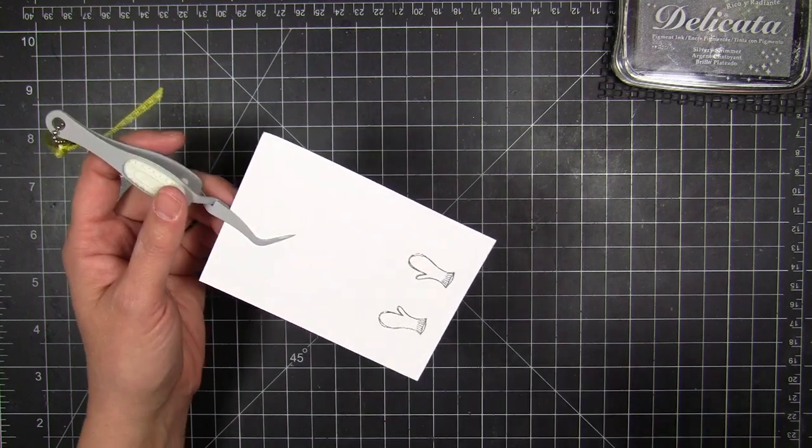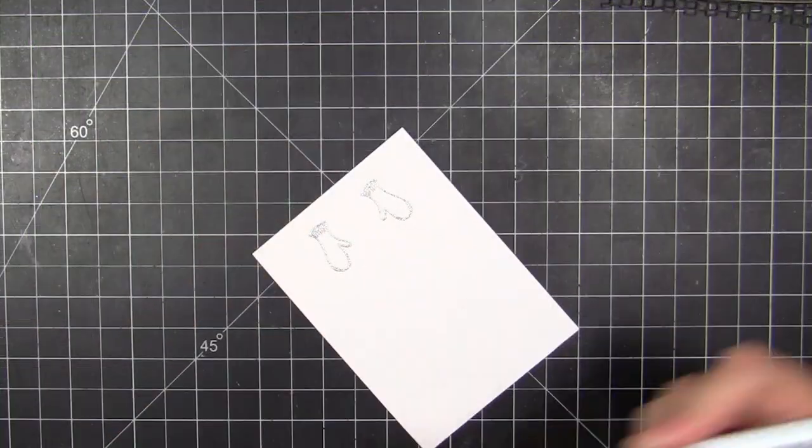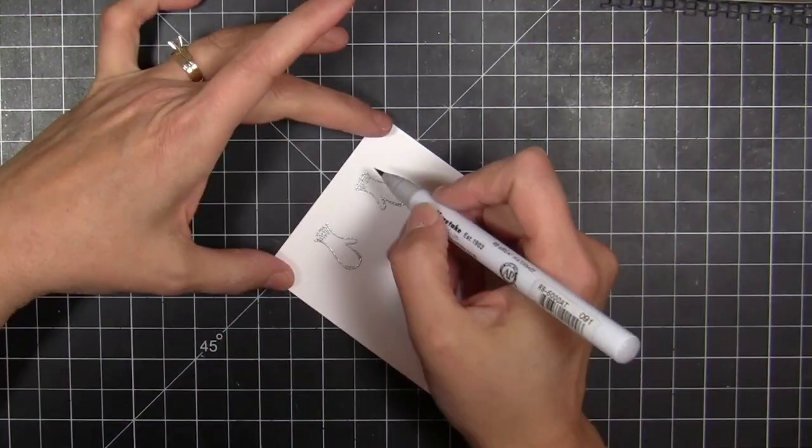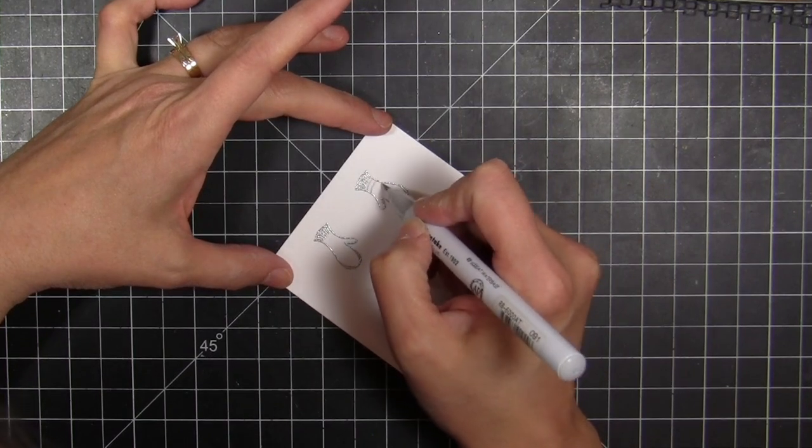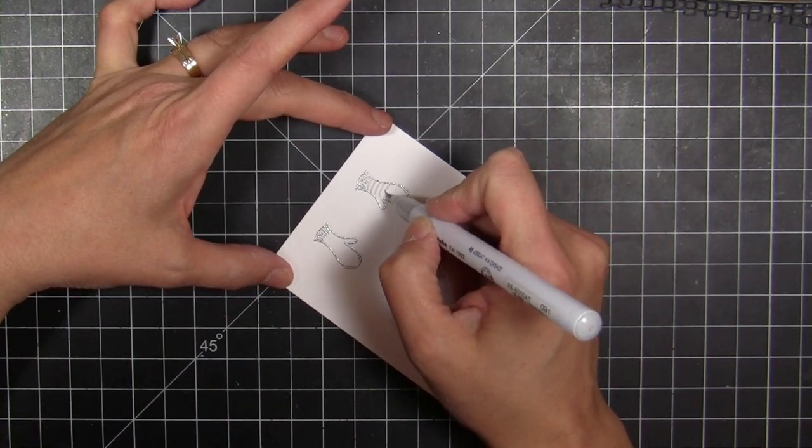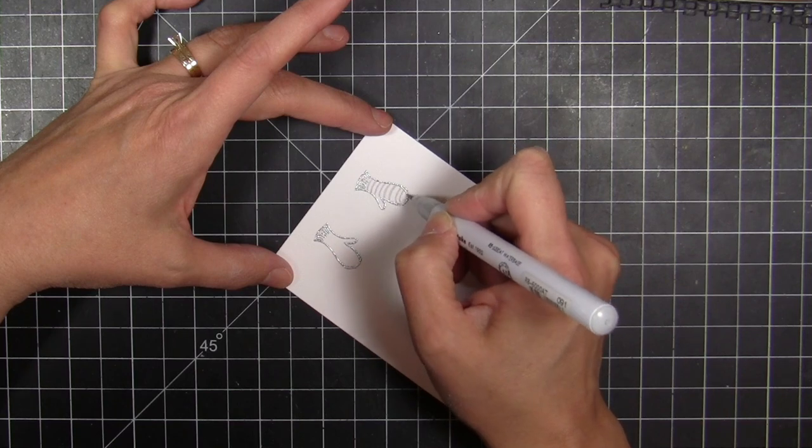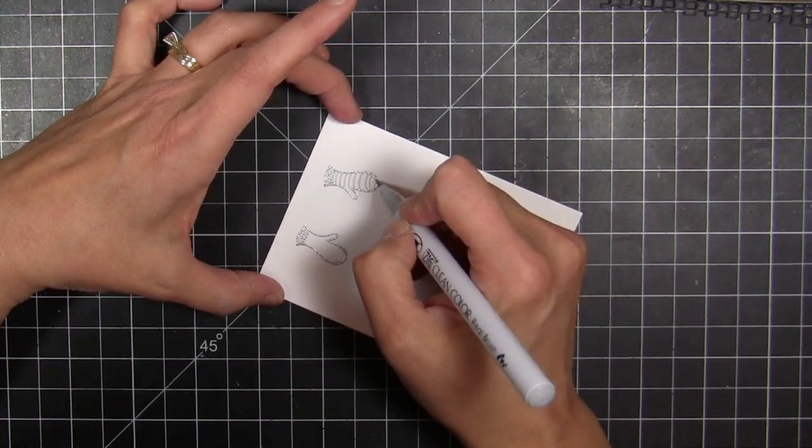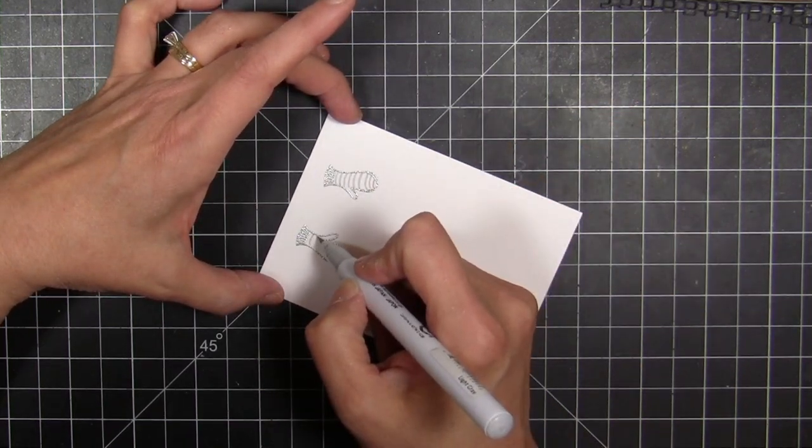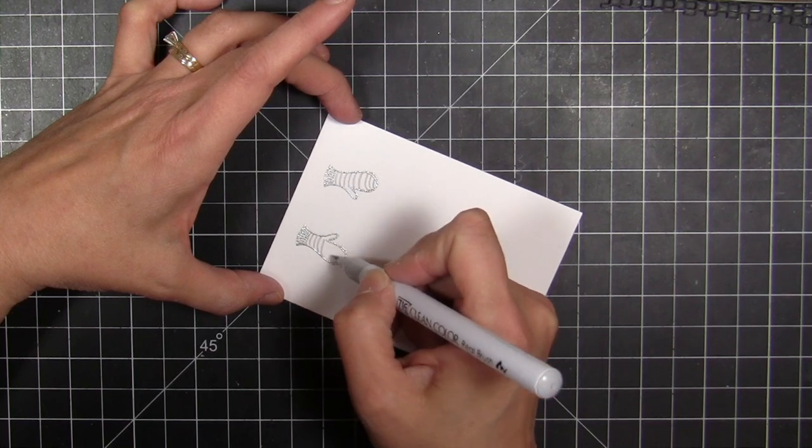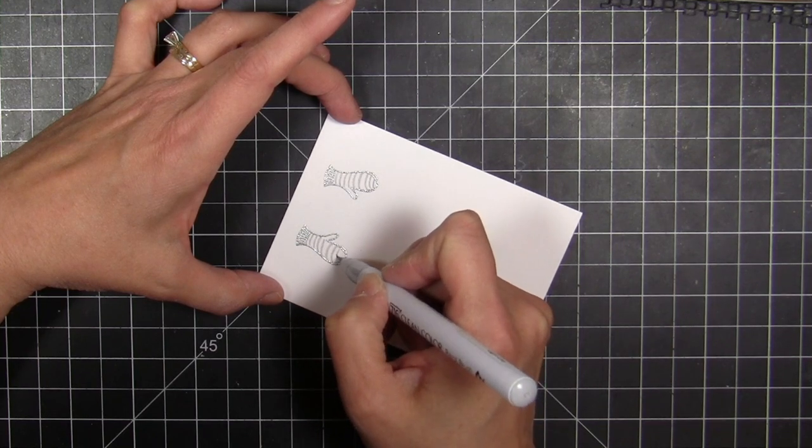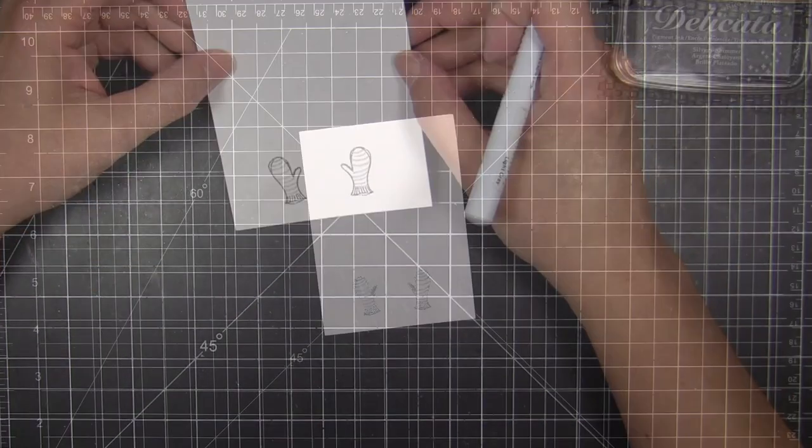So I just went ahead and prepped the surface of that with an anti-static pouch and then went ahead and embossed it. And then I'm going to use one of the Kuretake Zig markers to just paint some quick brush stroke stripes. And at first I was going to watercolor and then I changed my mind. I thought the stripes would be fun and a little bit whimsical there on the glove. So I just went ahead and drew the stripes with the brush tip marker.